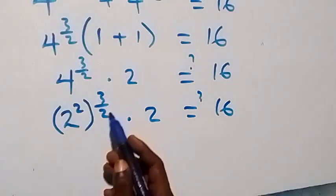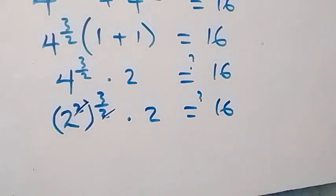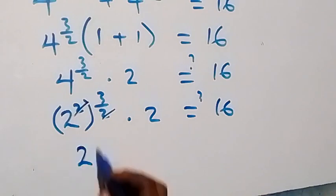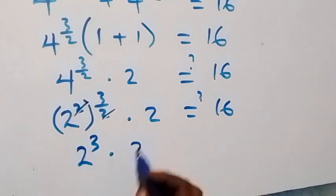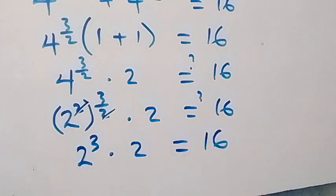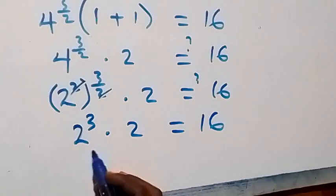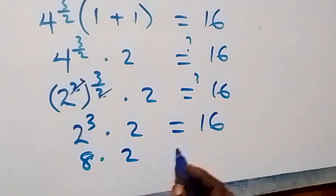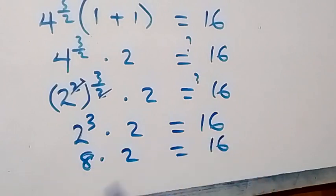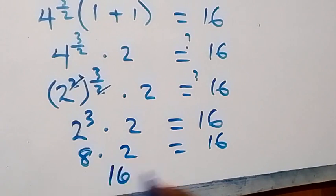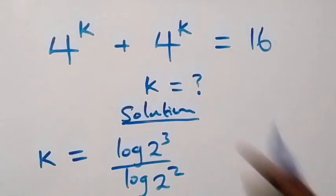The powers multiply: the 2s cancel, leaving 2 raised to power 3 times 2 equals 16. That's 8 times 2 equals 16, which is indeed 16. Left-hand side equals right-hand side, and hence we conclude that k equals 3 over 2 satisfies this given problem.